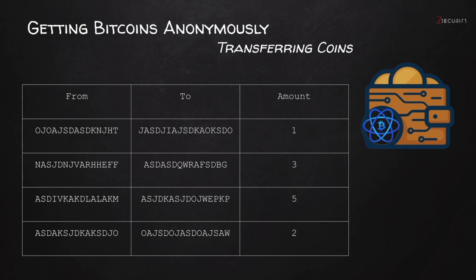That way, any transactions you make or receive will be linked to your real identity. Other examples include sending money to another address where you're unsure if the user is practicing proper opsec, or if you're unsure whether the user is using their money legally. We can't really know what people do in their personal lives, so breaking the link between the sender and receiver is not easy with Bitcoin because the blockchain is completely public.